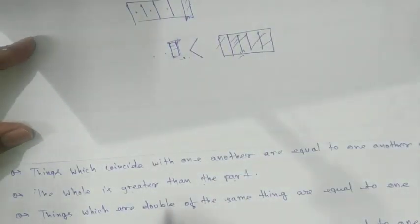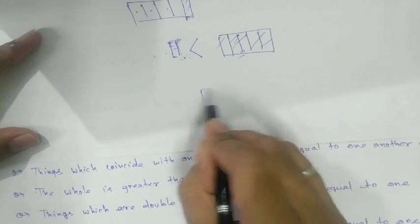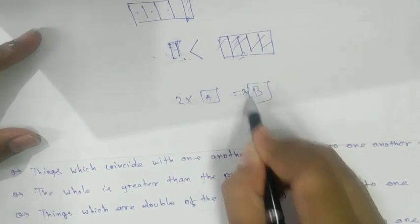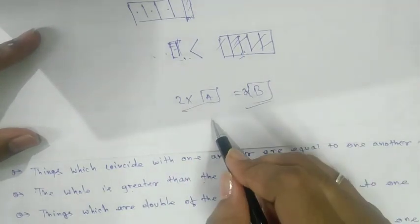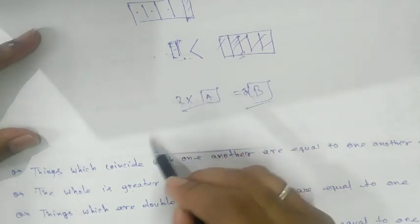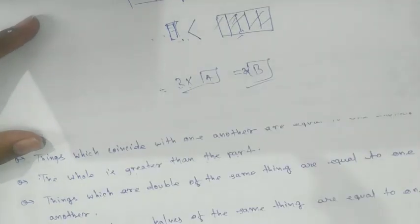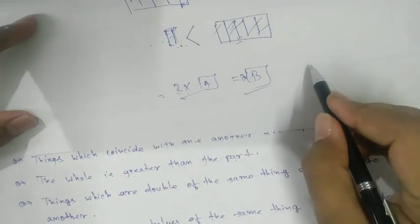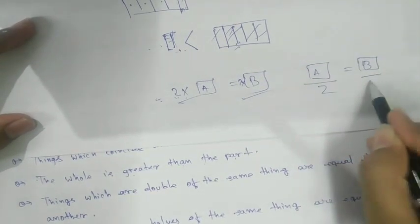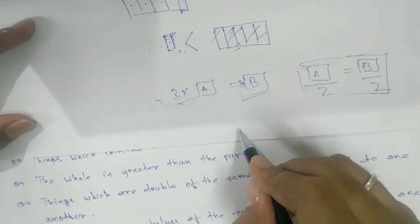Axiom 6: Things which are double of the same thing are equal to one another. If A equals B, and we double both, they remain equal. This is not only limited to doubling — if we triple or multiply by four or five on both sides, we get the same result. Axiom 7: Things which are halves of the same thing are equal — if A equals B and we take half of each, the halves remain equal.